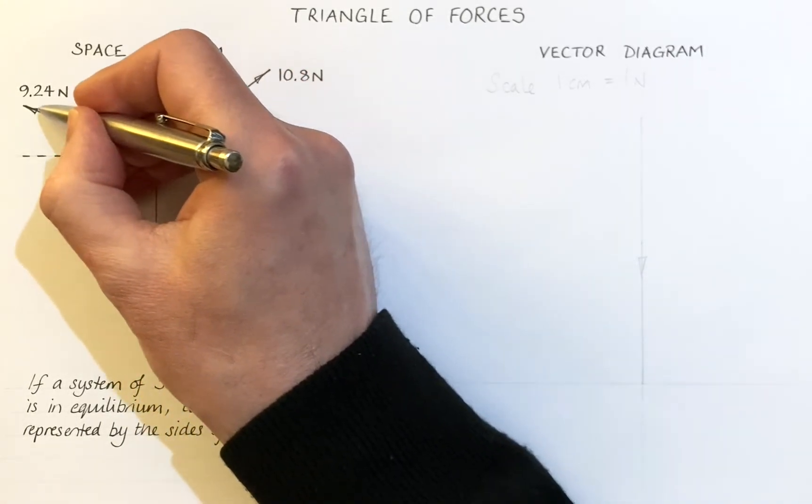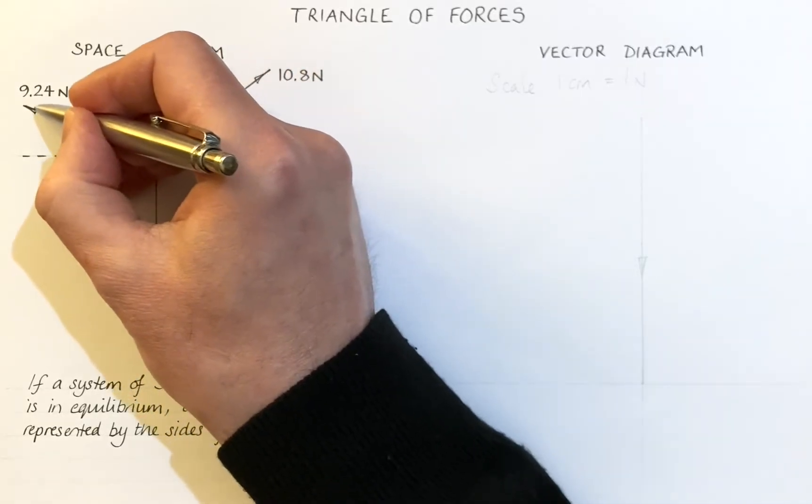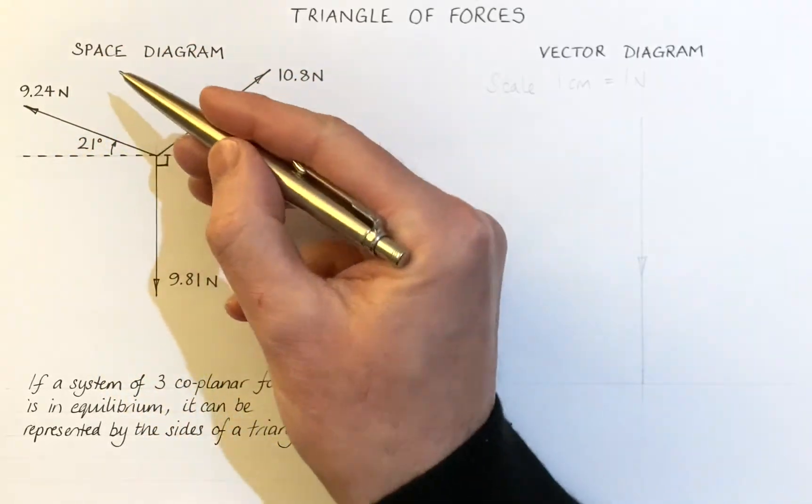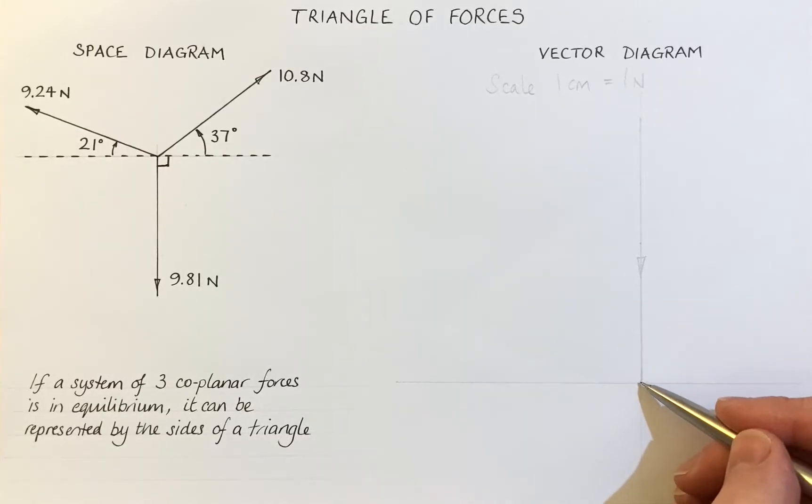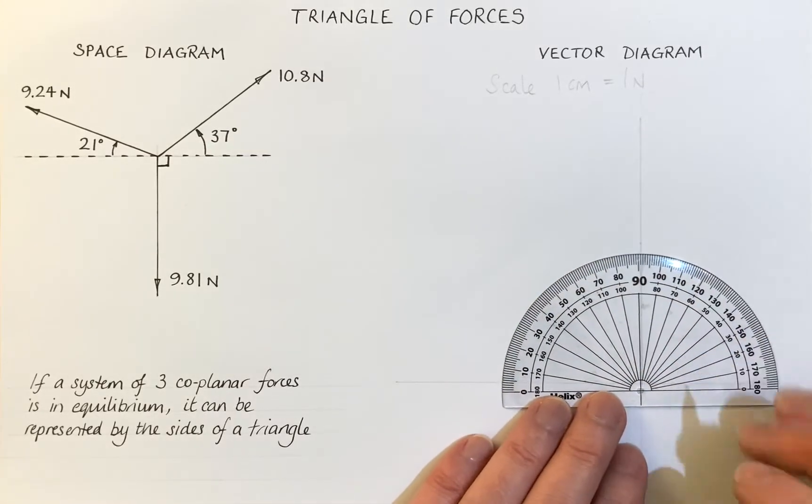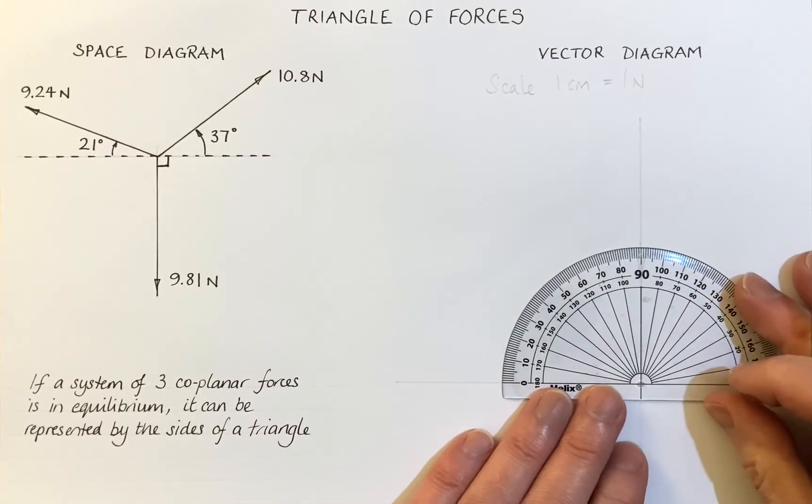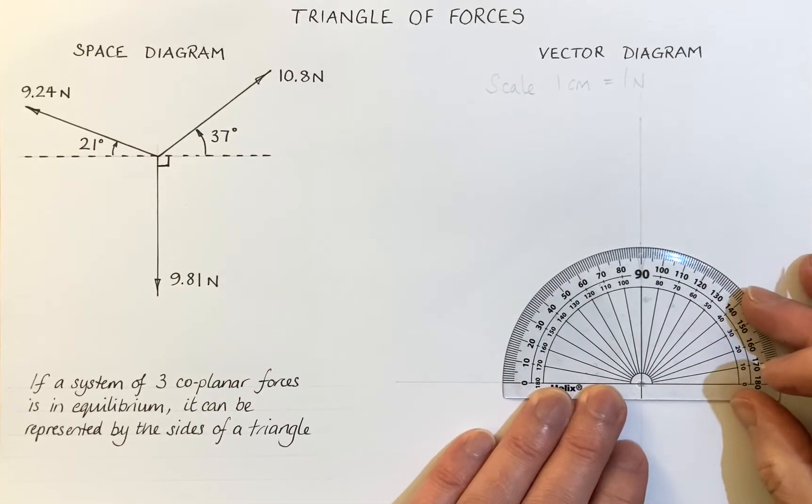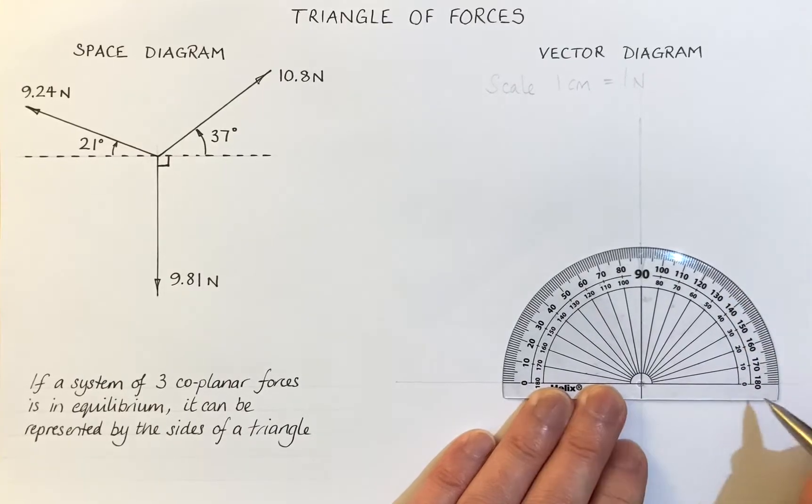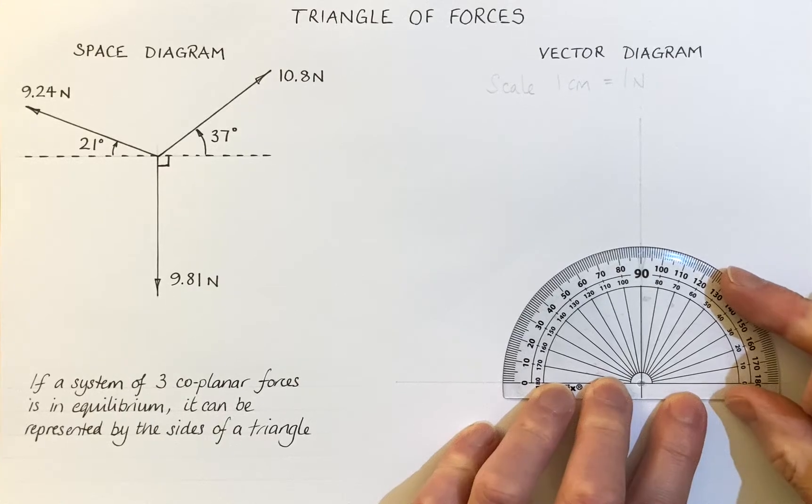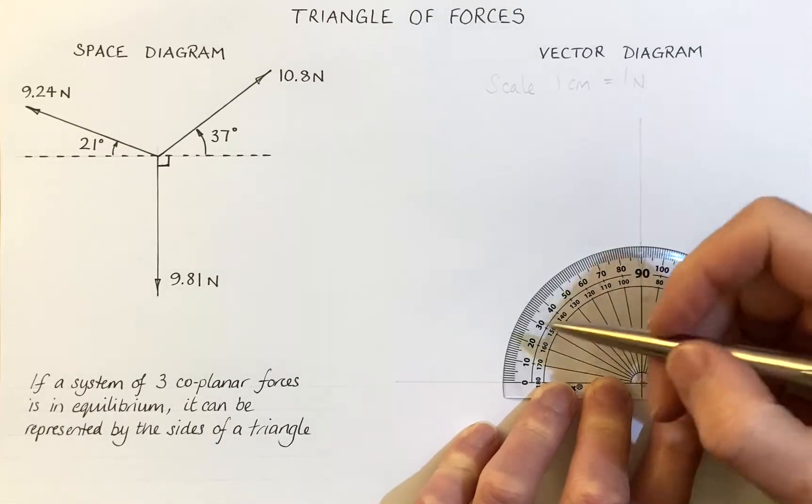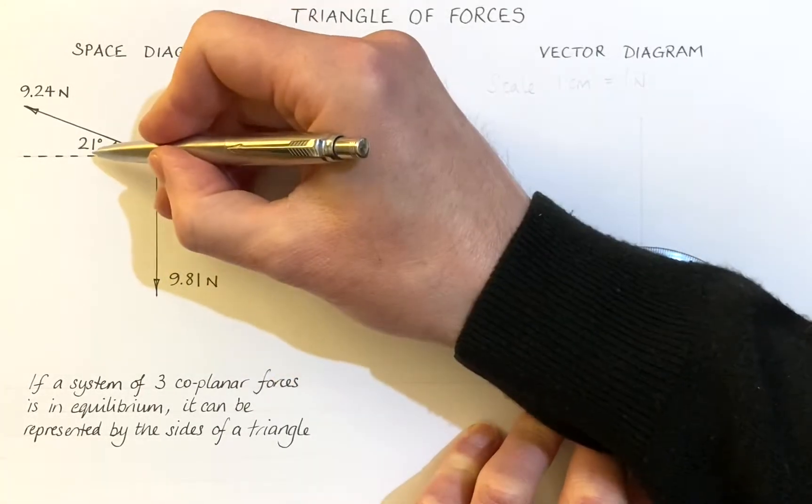Next up, we're going to do this vector here. This is 9.24 newtons and it's acting up from the horizontal at 21 degrees. So it's going to go up in this direction here. So I take my protractor again and I put the crosshairs back on the origin there. Carefully line up the zero here and zero on this side too. Oops, let's have another go. There we go. And I measure around 21 degrees.